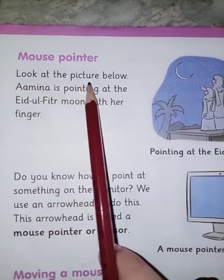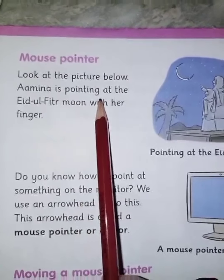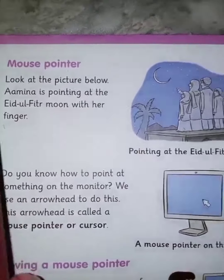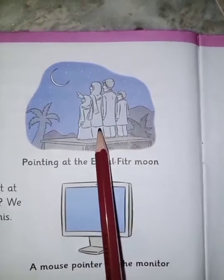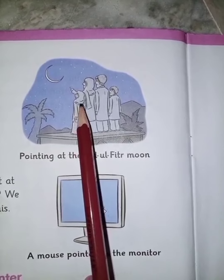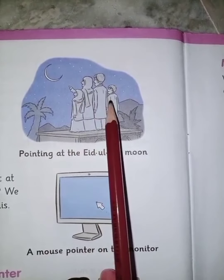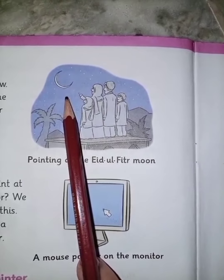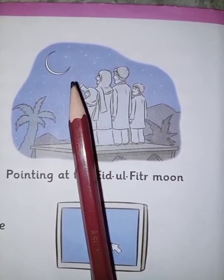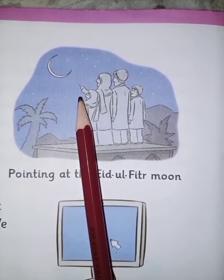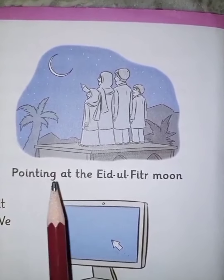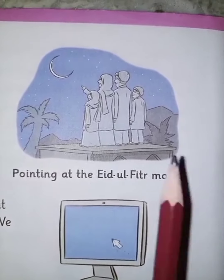Look at the picture below. Amna is pointing at the Eid ul Fitr moon with her finger. She is Amna — Amna apne parents aur bhai ke saath moon dekh rahi hai. Amna chaand ki taraf apni finger se ishaara kar rahi hai. So what is Amna doing here? She is pointing at the moon with her finger.